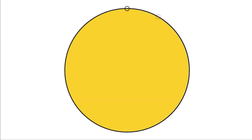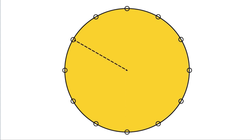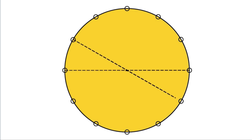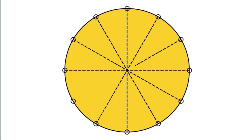A circle is a set of points that are the same distance from a center point. So the distance from the center to any point on the edge always measures the same length. This special attribute of a circle allows it to have an infinite number of lines of symmetry — more lines of symmetry than we can count.